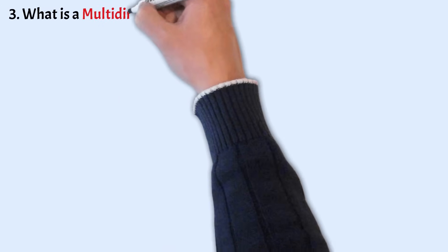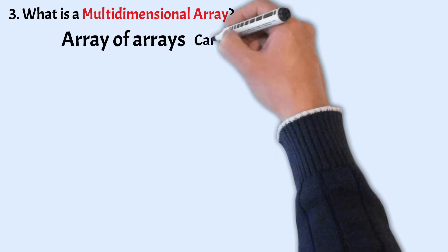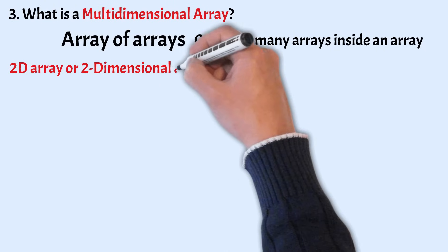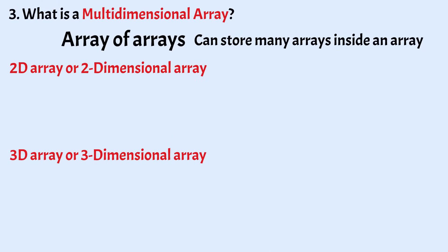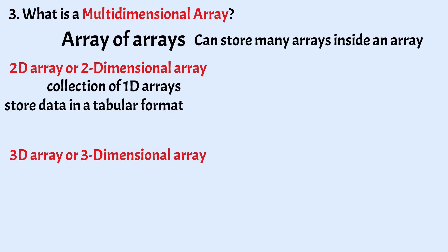What is a multidimensional array? A multidimensional array is also known as an array of arrays, meaning we can store many arrays inside an array. A 2D array (two-dimensional) and 3D array (three-dimensional) are considered as multidimensional arrays. A 2D array is a collection of 1D arrays and stores data in a tabular format, represented as: array name, number of rows, number of columns.